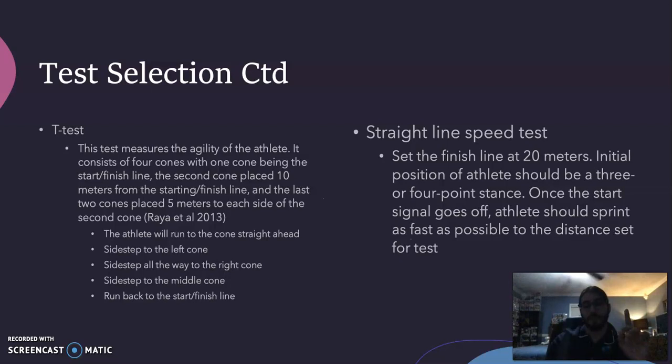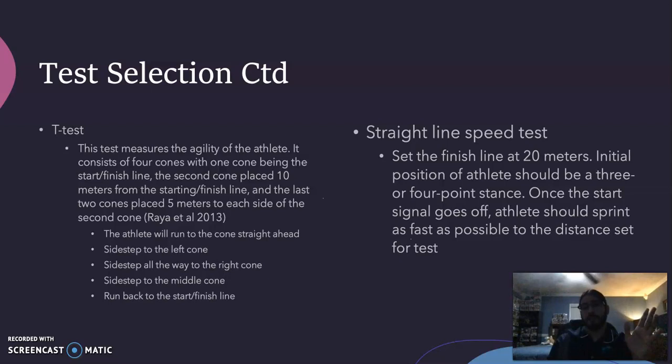For the straight-line speed test, a 20-meter finish line is set up. The initial position of the athlete should be a three- or four-point stance; once the signal goes off, the athlete sprints as fast as possible to the distance set for the test. For the 300-yard shuttle, two lines are drawn 25 yards from each other.